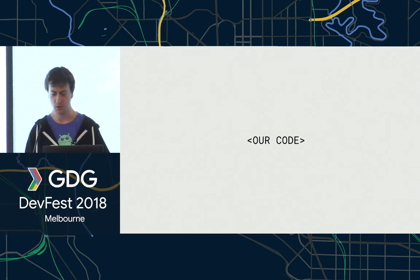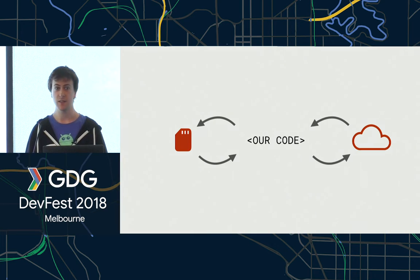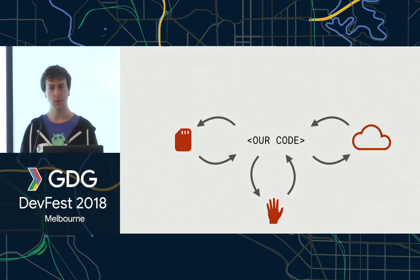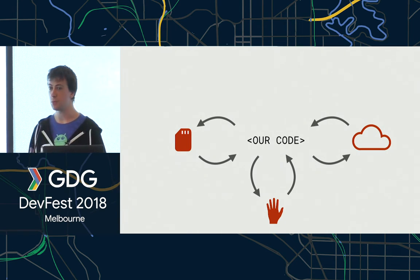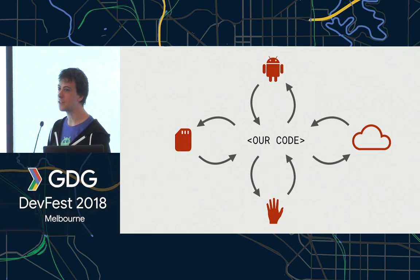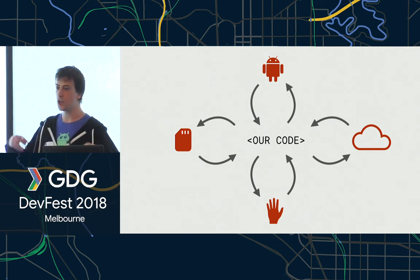We might be writing our code and then need to execute a network request — we send it off and it comes back, and we don't know how long that's going to take. Once we've got that, maybe we need to write it to disk, and then observe as the contents of the disk change over time. We can think of the user as an asynchronous system too — we present them with user interfaces and they give us back inputs. Android itself has lots of different async APIs we interface with. RxJava has been a great tool for composing all of this stuff together as a cohesive whole.